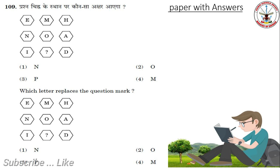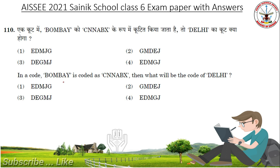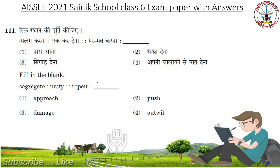Which letter replaces the question mark? Answer is M. In a code, BOMBAY is coded as CNNA BX. What will be the code of Delhi? Answer is Option 4: EDMGJ. Fill in the blank: Segregate is to Unified, then Repair is to. Answer is Damage.